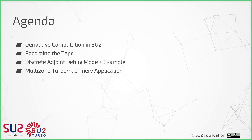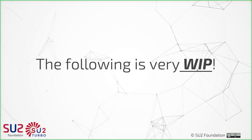The first half will cover derivative computation — how we record the objective functions — and then we'll give an example of the debug mode that is implemented. I'll continue from there and give a practical example of how we solve issues with the tape recording for turbomachinery-specific features. Fair warning: the following is very much work in progress, I can make no guarantees that this is correct or will work for you, but it is quite far along.